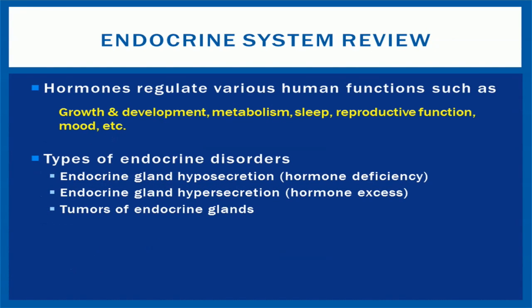These hormones regulate various bodily functions including growth and development, metabolism, sleep, reproductive function, and mood. Too much or too little of any hormone can be harmful. For example, if the pituitary gland produces too much growth hormone, a child may grow excessively tall, and if it produces too little, that child may be abnormally short. These disorders are due to endocrine gland hyposecretion or hypersecretion, which are a deficiency and excess of hormone production, respectively.